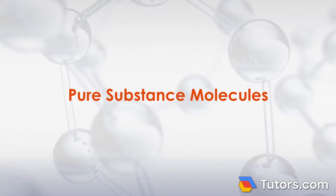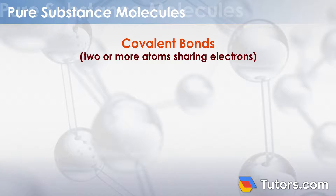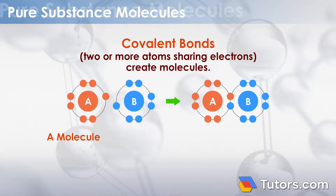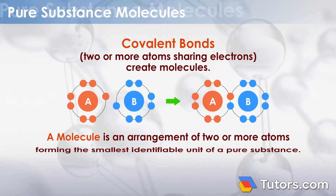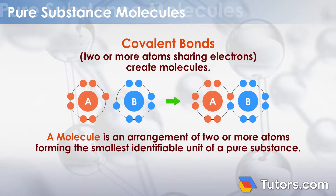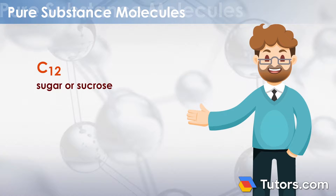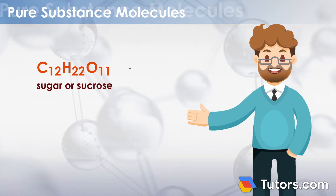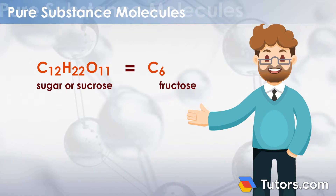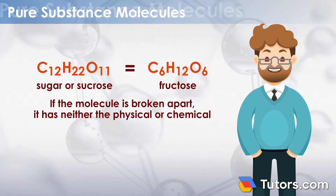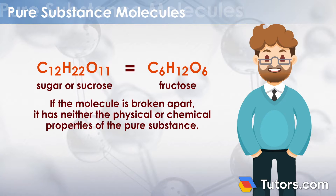Pure Substance Molecules: Covalent bonds — two or more atoms sharing electrons — create molecules. A molecule is an arrangement of two or more atoms forming the smallest identifiable unit of a pure substance. A molecule of sugar, or sucrose (C12H22O11), is a pure substance, similar in sweetness to another pure substance, the molecule fructose (C6H12O6). If the molecule is broken apart, it loses the physical and chemical properties of the pure substance.